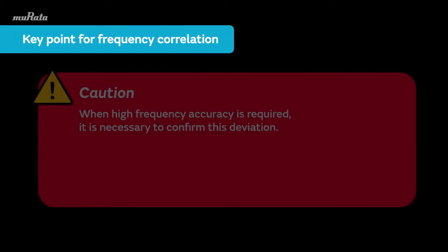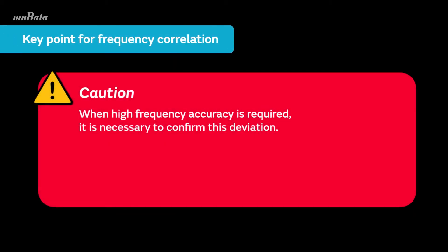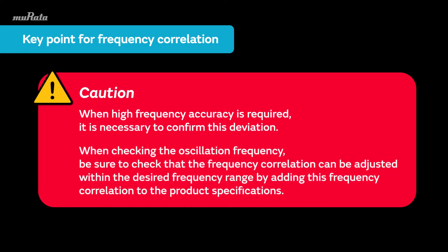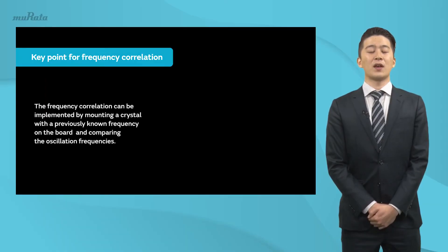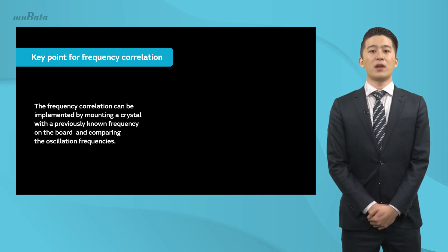When high frequency accuracy is required, it is necessary to confirm this deviation. When checking the oscillation frequency, be sure to check that the frequency correlation can be adjusted within the desired frequency range by adding this frequency correlation to the product specifications. For customers, the frequency correlation can be implemented by mounting a crystal with a previously known frequency on the board. The customer can then confirm by measuring and comparing the oscillation frequencies.